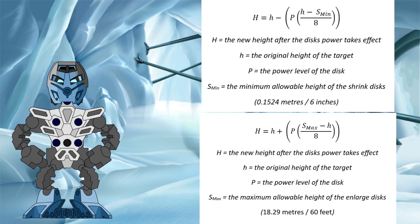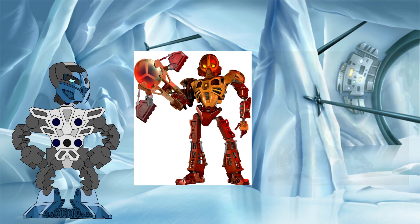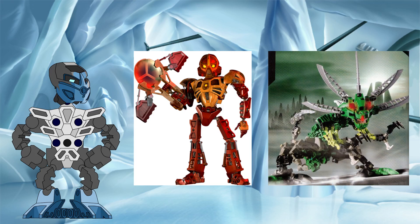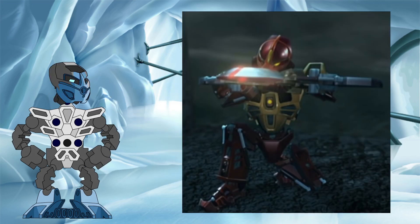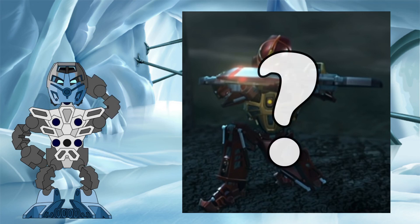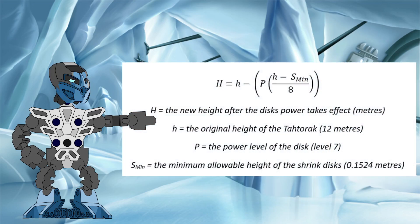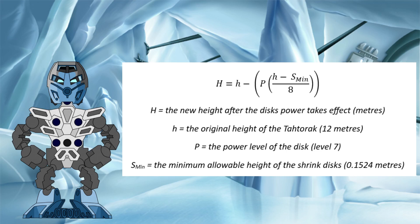It's time for these investigations to get interactive. I'll set the scene. You are Toa Vakama, and the Tatarak is rampaging through Tarmetru. You decide you need to bring it down a size. As a former mask maker, your mathematician's brain crunches the numbers as you load your Kanoka launcher with a level 7 shrink disc. Taking careful aim, you fire at the 12 meter tall Rahi. What new size should you expect to see when the disc hits? Everything you need is on the screen now — pause the video and grab the calculator. Trust me, having a go yourself and getting to the answer is so incredibly satisfying.